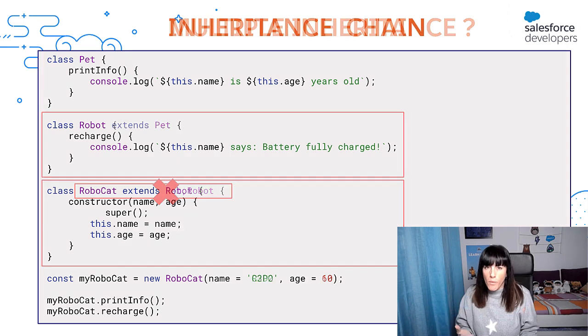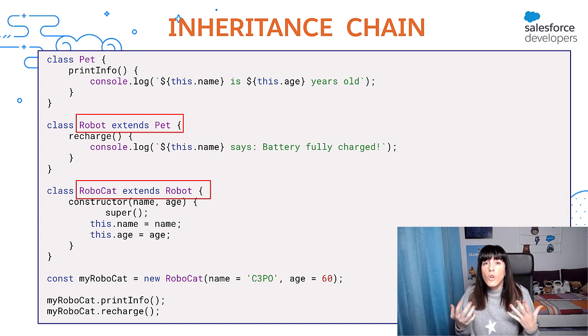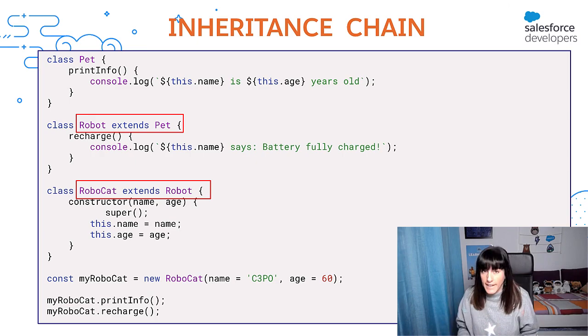We could work around that by creating an inheritance chain. We could make the Robocat class extend from robot and then the robot class extend from pet, but that solution is not ideal for all cases. First, your robot class could be used to represent robots which are not Robocats, for instance an intelligent vacuum cleaner. Second, imagine that the robot class comes from a third-party library that doesn't know anything about the pet class. Is there a way in which we can inherit methods from both classes without coupling them?